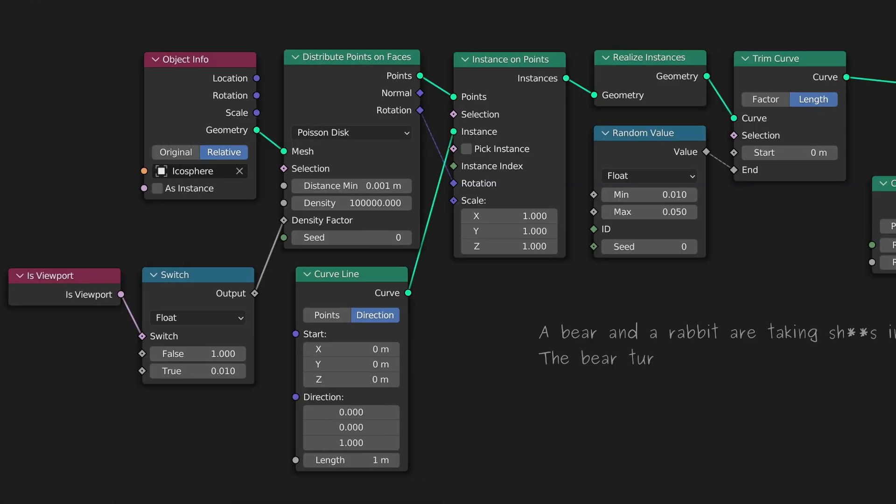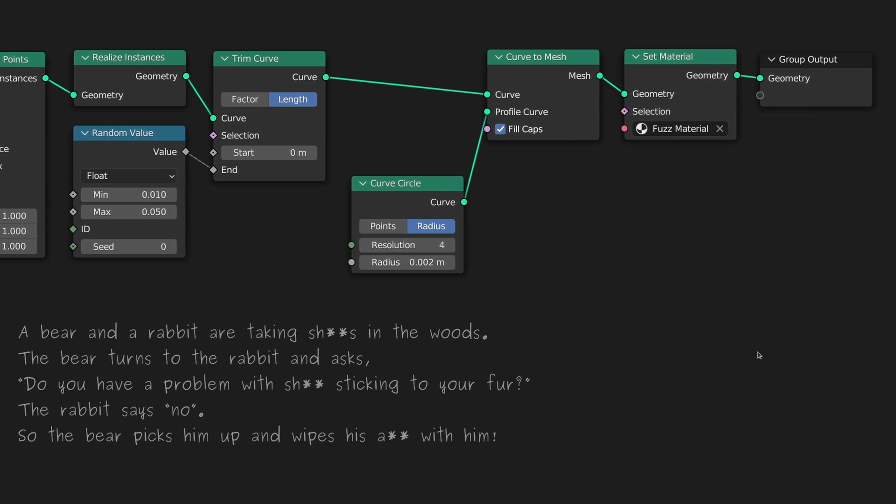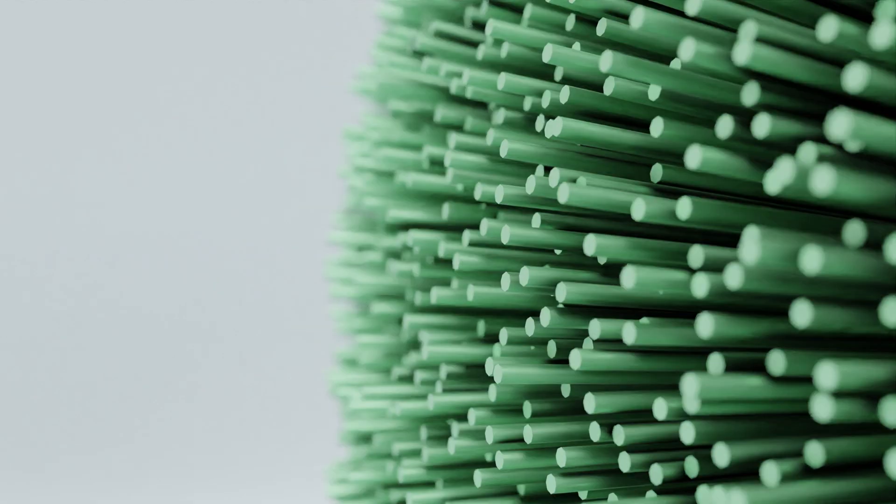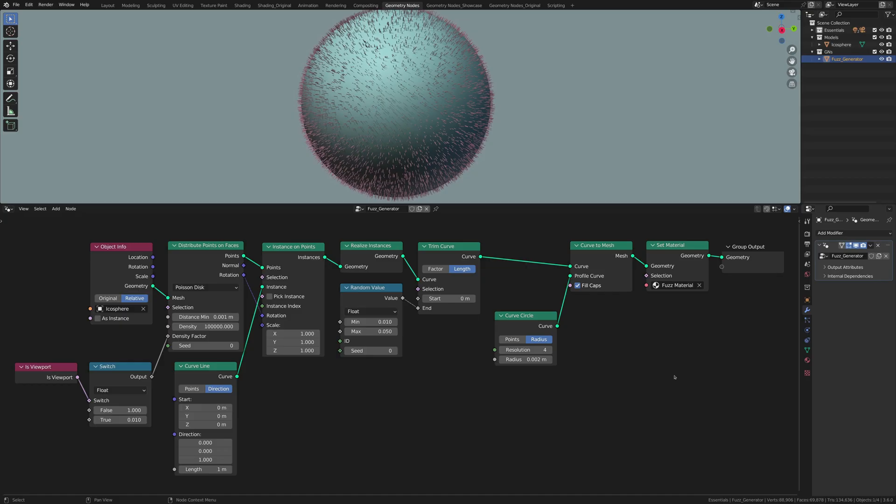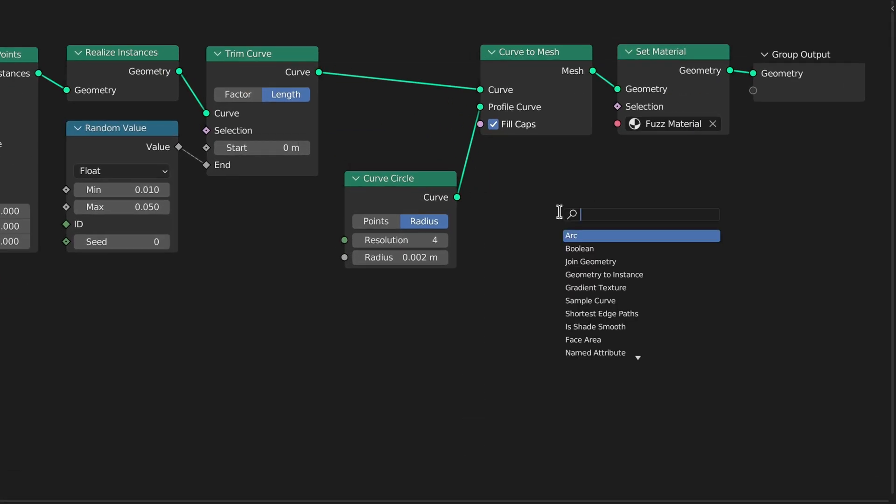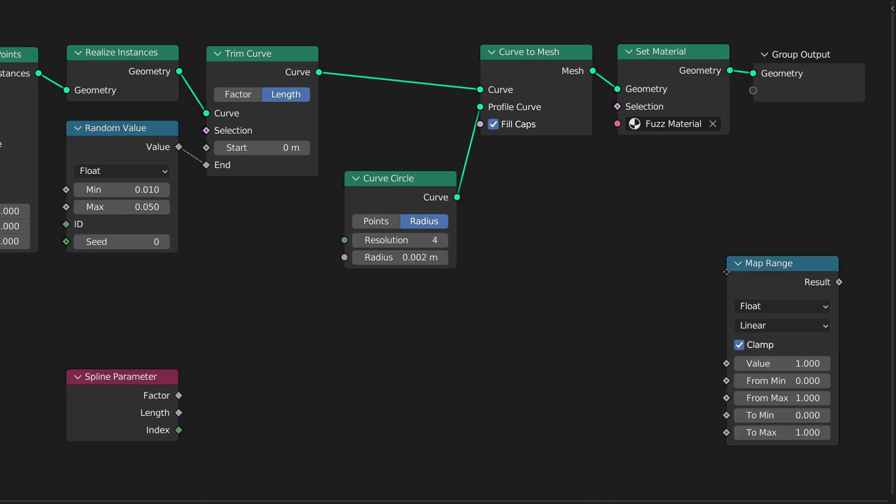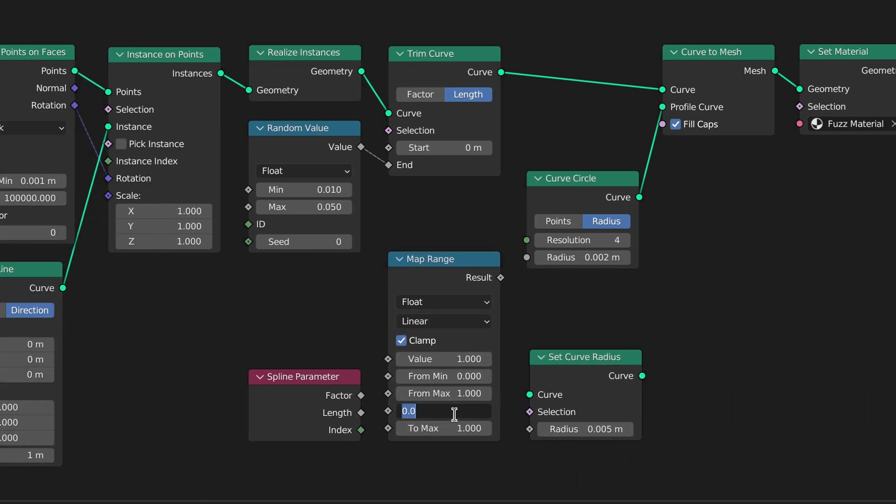At this point, we are 90% into achieving the final fuzz effect. The final 10% is to make the tip of the strands pointy. This is rather easy, especially if we make use of a spline parameter node, a map range node, and a set curve radius node.